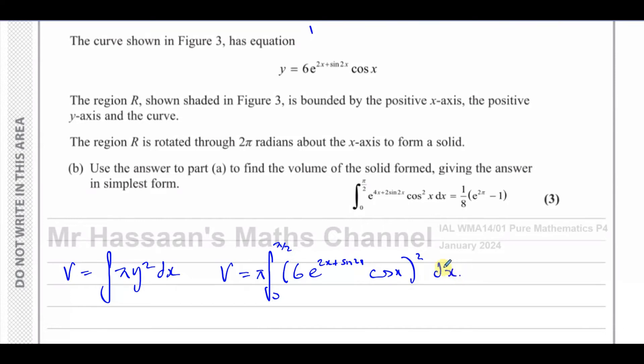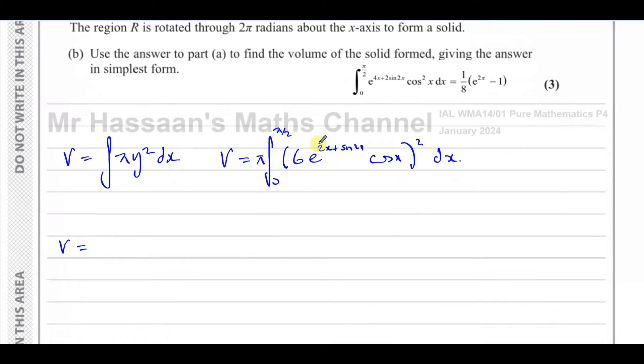When you square this, you're going to end up with V equals, that's 6 squared is 36, which I'll write on the outside, so 36π. When you square e to the power of something, if I have a to the power of x to the power of y, I have a to the power of x times y. So when I square e to the power of 2x plus sine 2x, I've got to multiply this by 2. And cosine x all squared is cosine squared x dx.